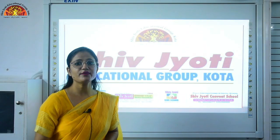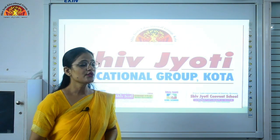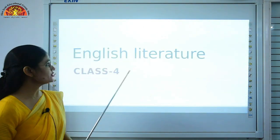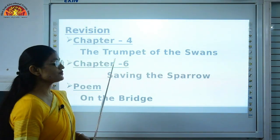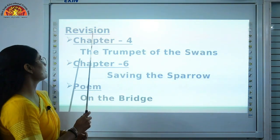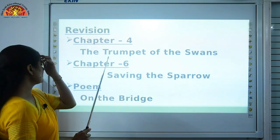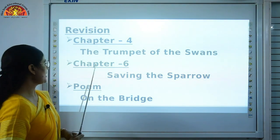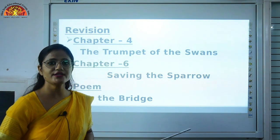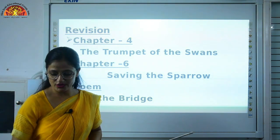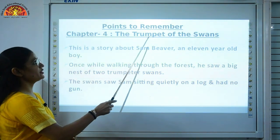Hello students, myself Rajveer and I would like to welcome you all on behalf of Shivjyoti Educational Group, Kota. Today we will revise English literature for class 4. The topics we are going to revise are chapter number 4, The Trumpet of the Swans, chapter number 6, Saving the Sparrow, and the poem On the Bridge. We have read these three topics earlier, but we are revising them again. Let's start with chapter number 4, The Trumpet of the Swans.